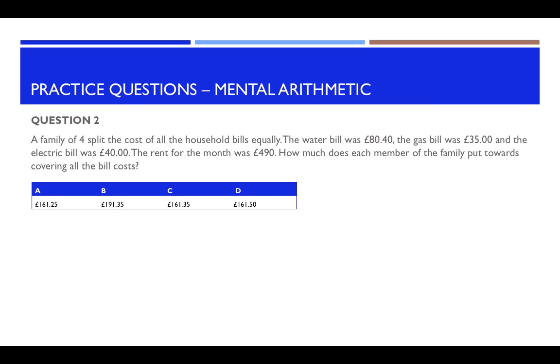So first of all, you will need to work out how much needs to be paid all together. So you need to add up all of these numbers. So you add up £80.40 plus £35 plus the £40 and plus the £490. And this will give you a total of £645.40.